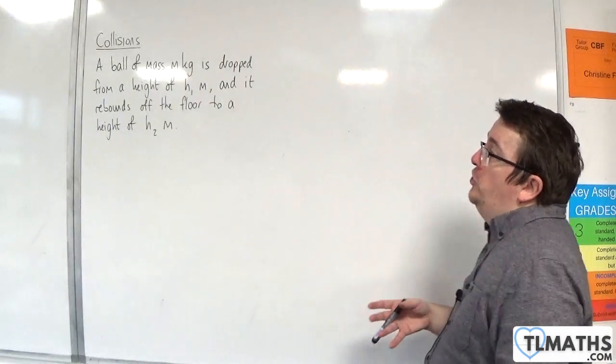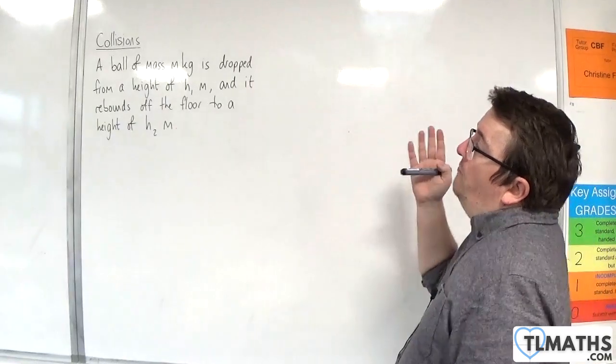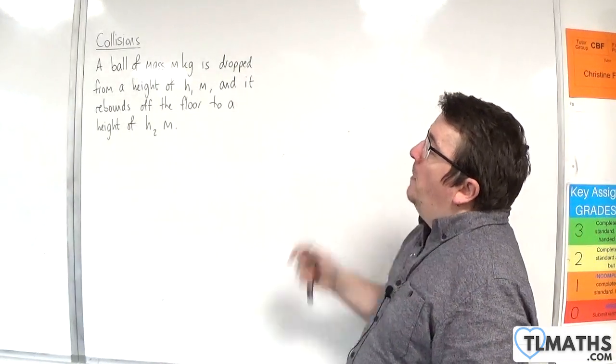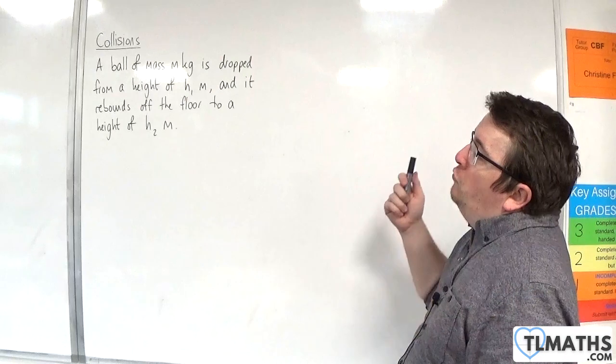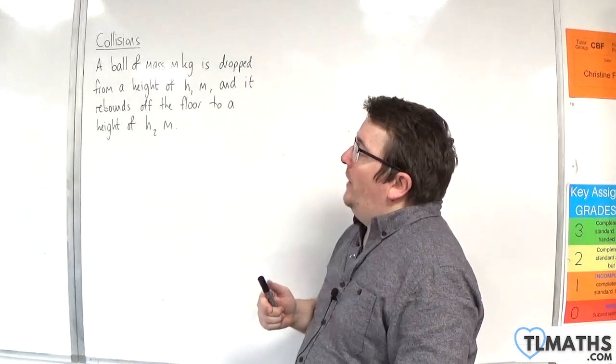So in this video we're going to take a look at the general case. A ball of mass m kilos is dropped from a height of h1 metres and it rebounds off the floor to a height of h2 metres.